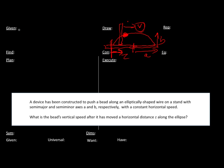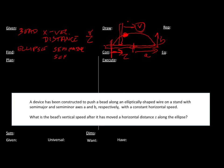I know about the bead - its x velocity - and I said that was v. I know how far it's gone, and that was z, and I know some stuff about the ellipse, and that was the semi-major and semi-minor axes a and b. And I want to find the y component of the velocity, find vy, the y component of the velocity.